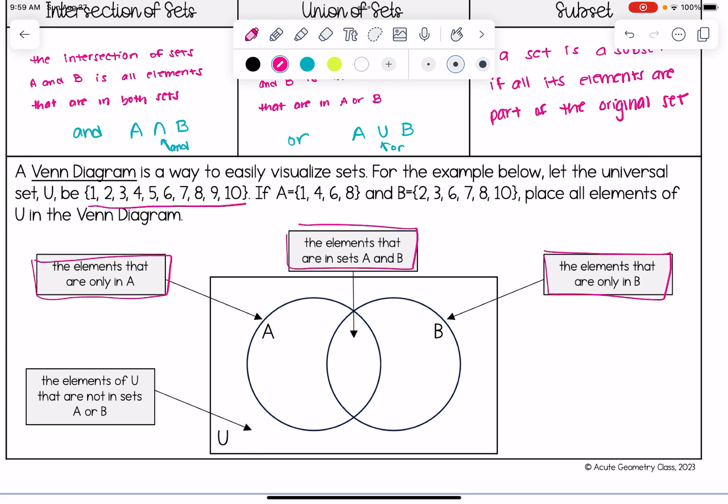Where I like to start is the middle right there, the elements that are in sets A and B. So let's take a look at sets A and B and see if we notice that any values that are in both. So set A has one, set B does not. Set A has four, set B does not. Set A has six, so does set B. So notice they have these in common and they also have an eight in common.